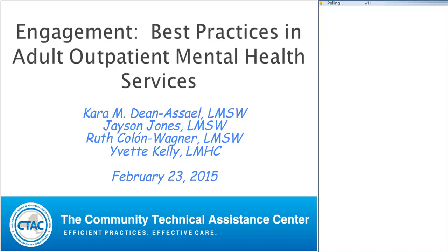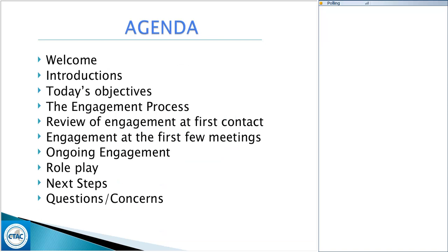We're going to go over the agenda quickly. We'll talk about our objectives, the engagement process, reviewing the process from last time, engagement at first contact, then the engagement at the first few meetings, and ongoing engagement. We have a role play with Ruth and Jason as a continuation of their first role play. We'll talk about next steps and take questions. You can send questions via the chat.